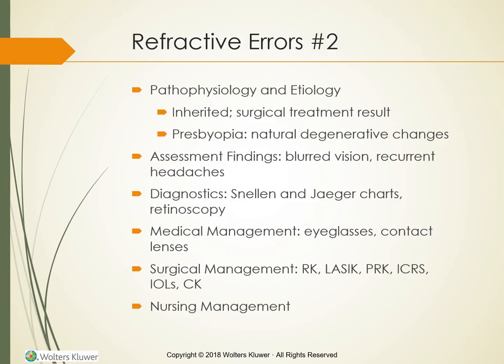Pathophysiology and Etiology: Refractive errors are inherited or occur as a result of surgical treatment of disorders of the cornea or lens. Myopia occurs in people with elongated eyeballs where light rays focus in the vitreous body before reaching the retina. Hyperopia results when the eyeball is shorter than normal, causing light rays to focus at a theoretical point behind the retina. Presbyopia occurs because of degenerative changes — the gradual loss of elasticity of the lens leads to decreased ability to accommodate for near vision. Astigmatism results from unequal curvatures in the shape of the cornea.